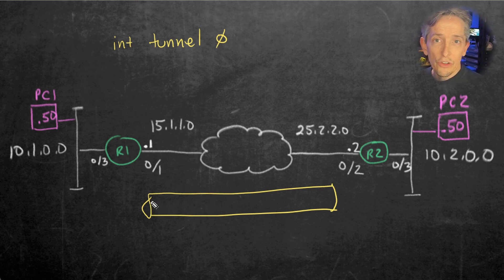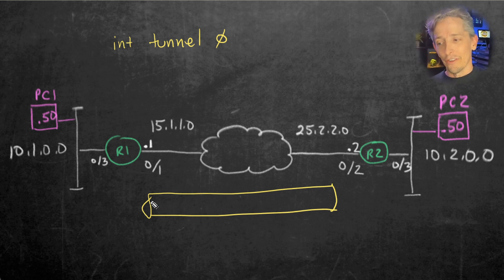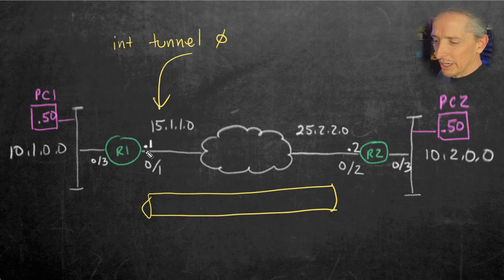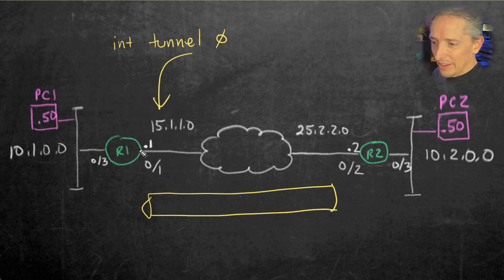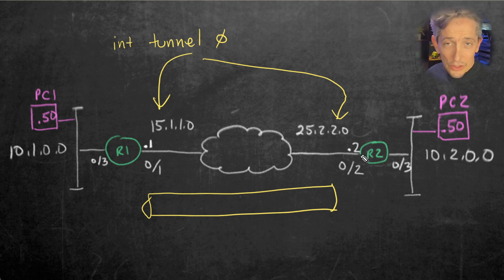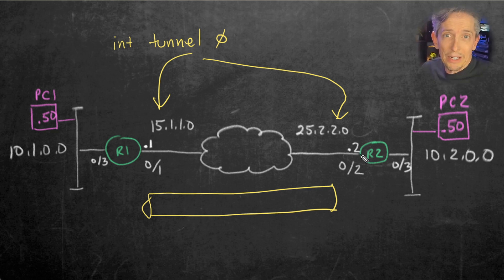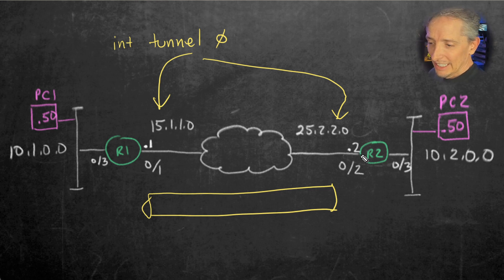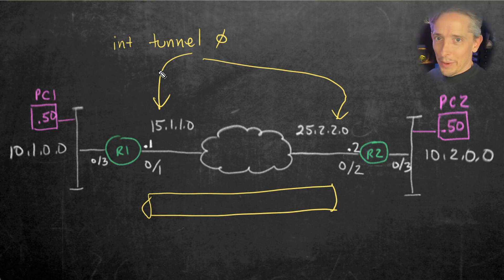Then we would specify a few details, such as where does this tunnel start from R1's perspective? The answer is the tunnel is going to start from 15.1.1.1 — that's its interface connected to the internet. And where is this tunnel going to end? The ending point is going to be at 25.2.2.2, which is the IP address on R2 connected to the internet. We do that respectively on both sides. The other part we need to do to make this tunnel functional is give each of these tunnel interfaces an IP address.